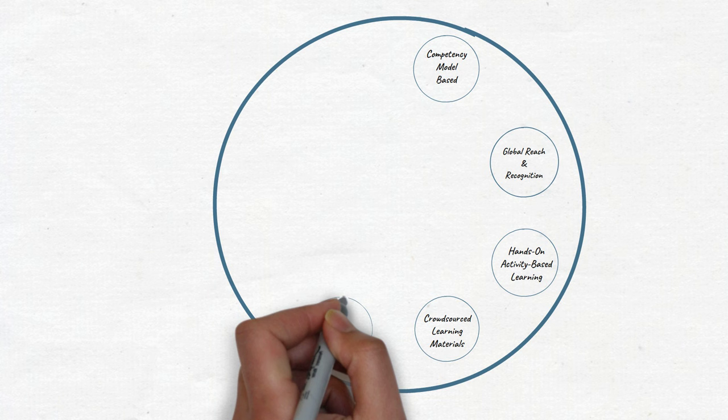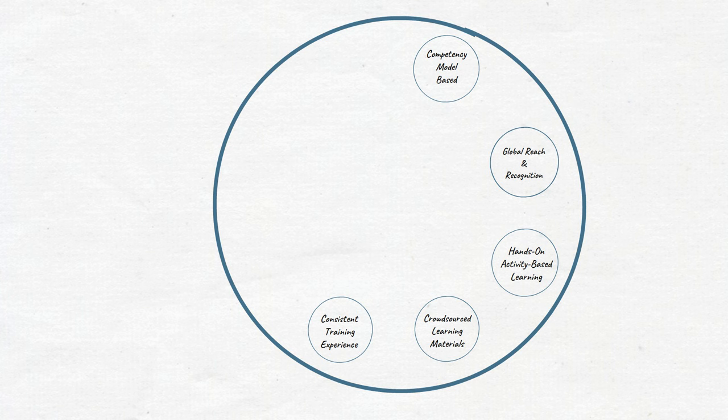On the path to becoming a professional Scrum trainer, or as we call them PST, candidates must have several years of Scrum experience. Once they apply to become a PST, they go through an extensive process which includes interviews, validation of knowledge, training, train-the-trainer events, peer reviews, and much more.